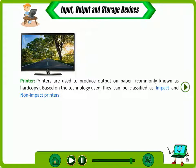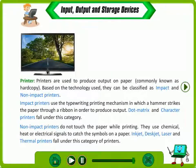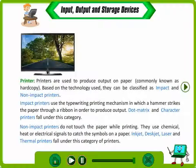Printers are used to produce output on paper, commonly known as hard copy. Based on the technology used, they can be classified as impact and non-impact printers. Impact printers use a typewriting printing mechanism in which a hammer strikes a paper through a ribbon to produce output. Dot matrix and character printers fall under this category. Non-impact printers do not touch the paper while printing; they use chemical, heat or electrical signals to produce symbols on paper. Inkjet, deskjet, laser and thermal printers fall under this category.